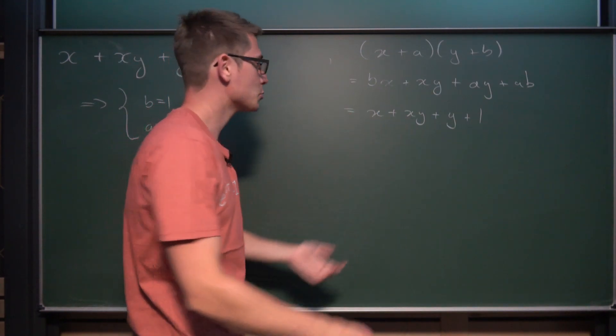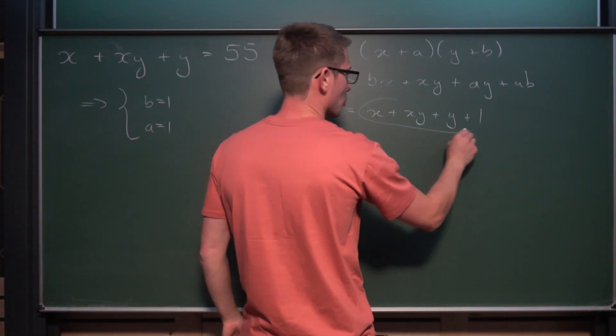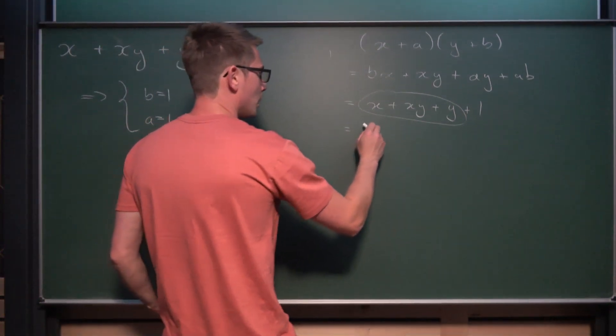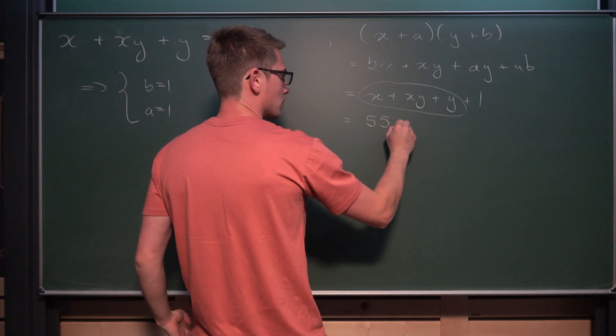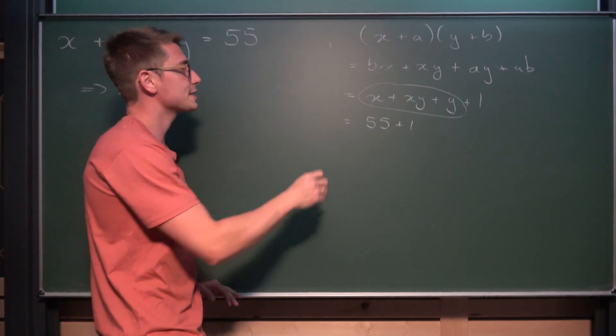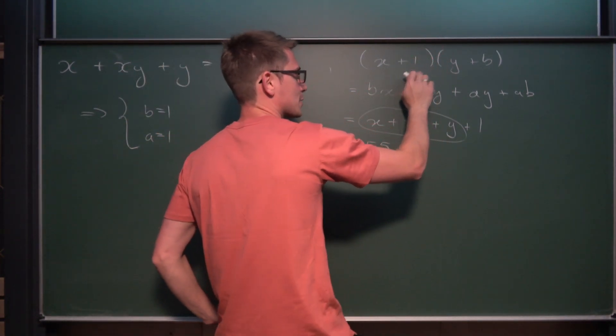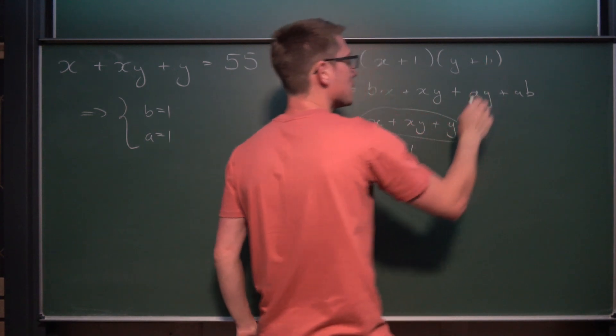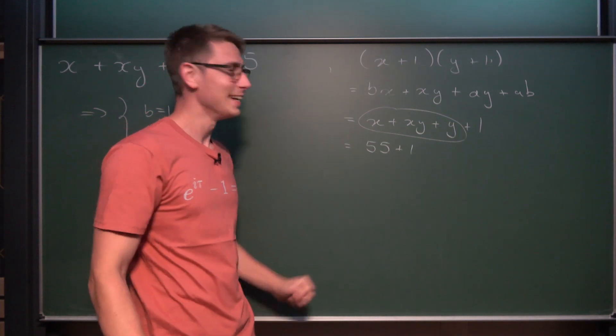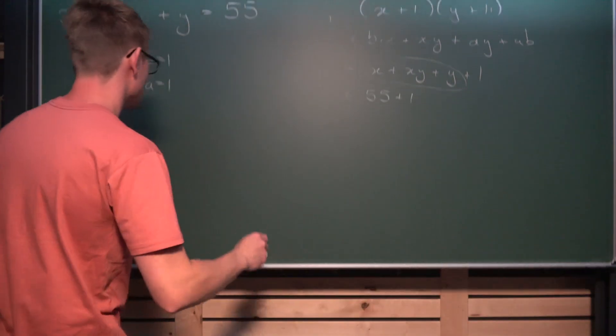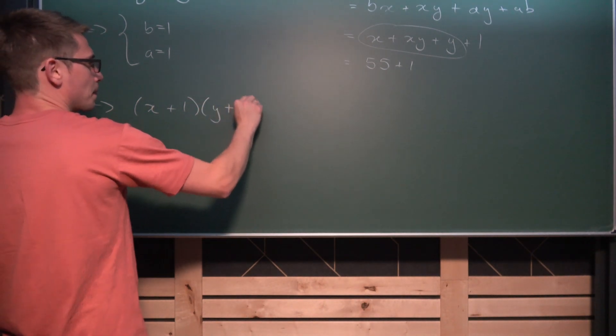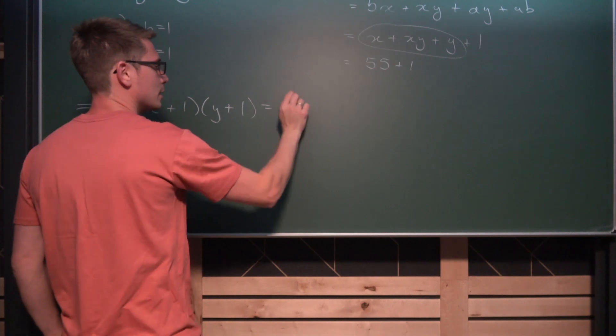And that is good, I would say. That is most definitely good, because we have recovered our original polynomial, which is nothing other than 55. So 55 + 1, the successor of 55, so 56 in other words, is the same as (x + 1)(y + 1). And this is very, very good. And I'll tell you why.